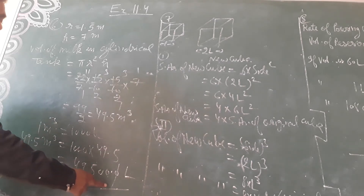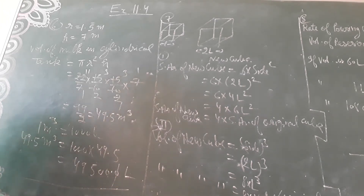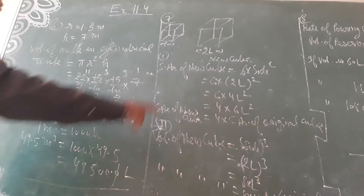Answer: 49,500 liters. Question number 2: the side of a cube is doubled.